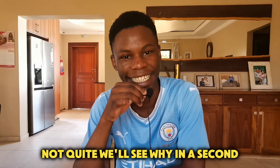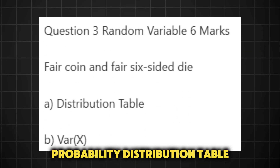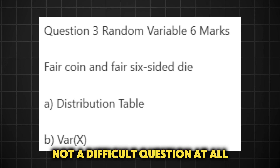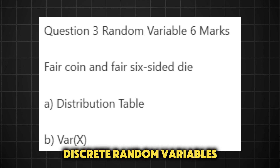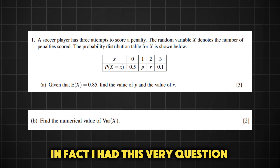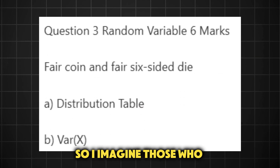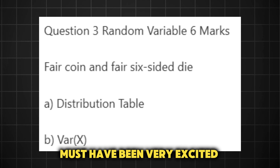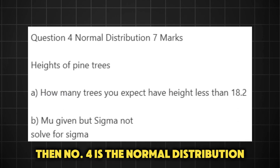Next in line is a six-mark probability distribution table — not a difficult question at all if you understand discrete random variables. In fact, I had this very question in my guess paper, so I imagine those who used the guess paper must have been very excited to see this question.